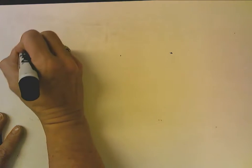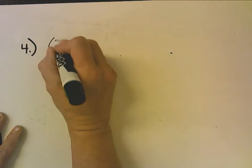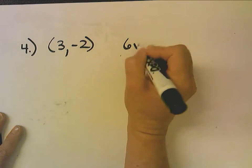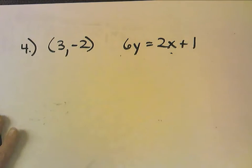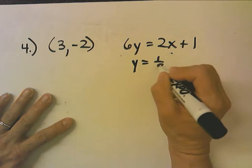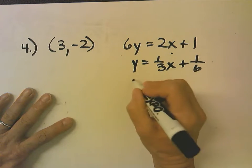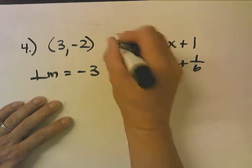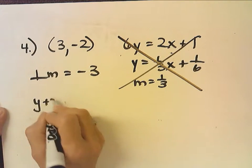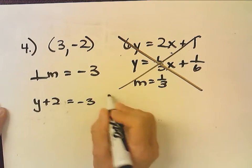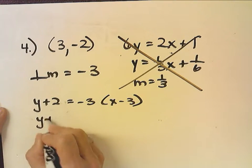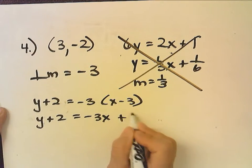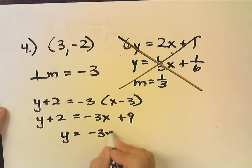For number 4, the point is (3, negative 2) and the equation is 6Y equals 2X plus 1. Finding the slope: divide by 6 to get Y equals 1 third X plus 1 sixth, so the slope is 1 third. The perpendicular slope is negative 3. Using point-slope form: Y plus 2 equals negative 3 times (X minus 3). Y plus 2 equals negative 3X plus 9, so Y equals negative 3X plus 7.